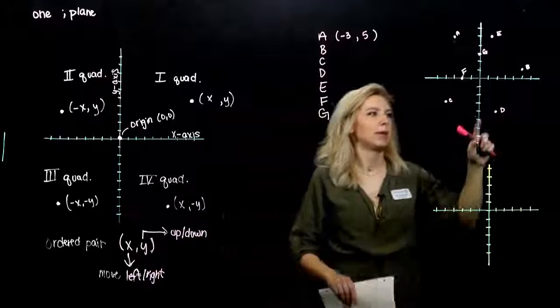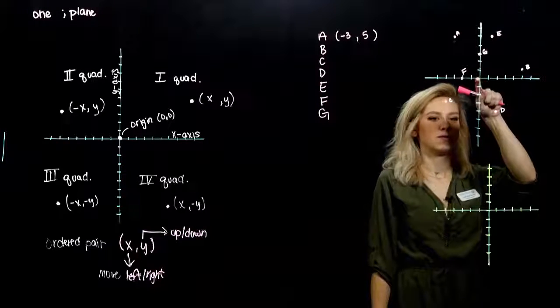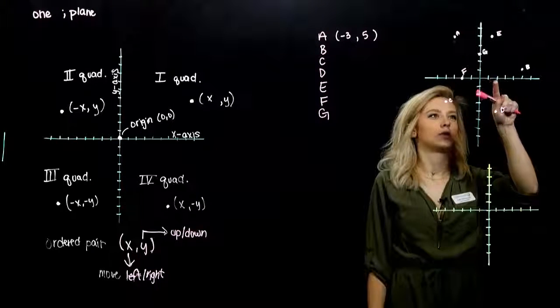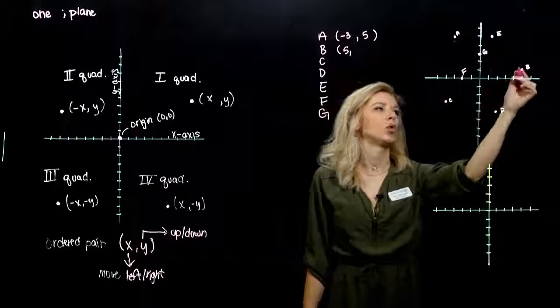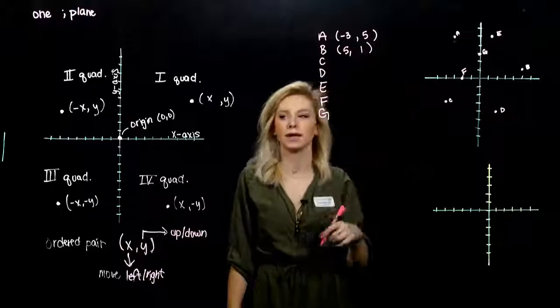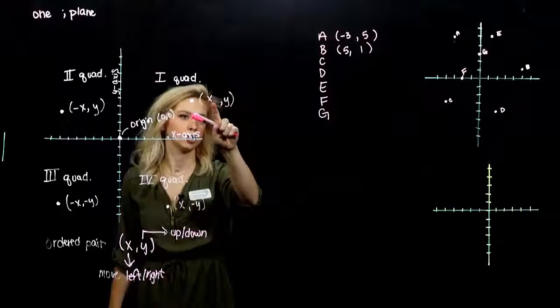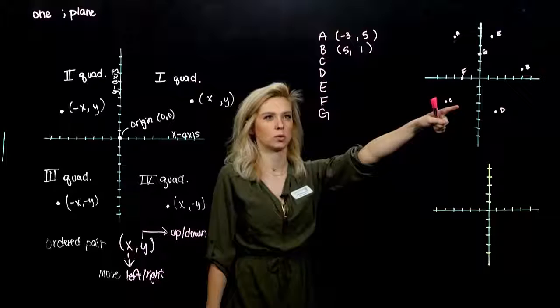What about for B? Starting from the origin, we move the x coordinate first. One, two, three, four, positive five. And up one, so positive one. And again, it matches our expectation. It should be positive, positive if it's in the first quadrant.